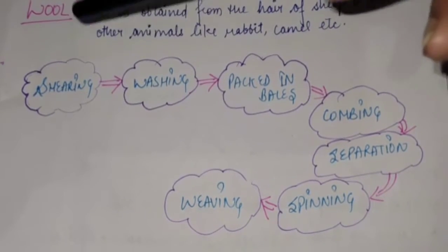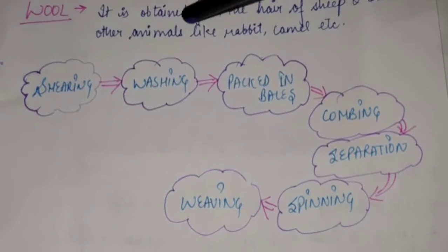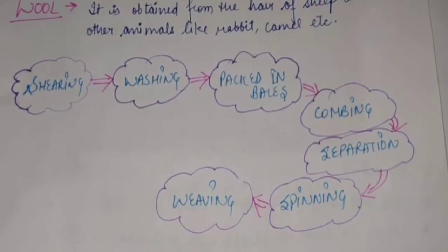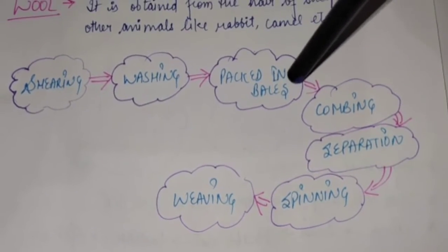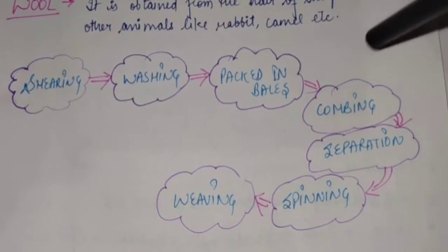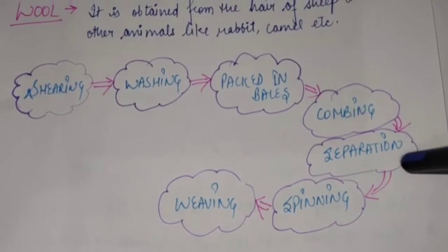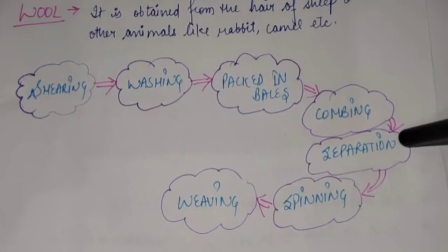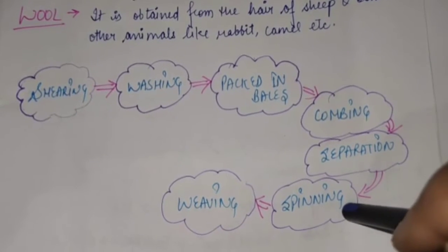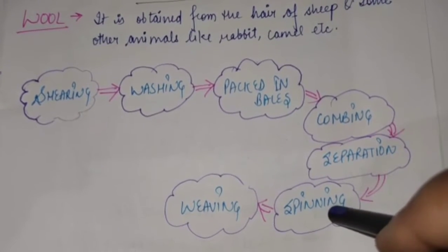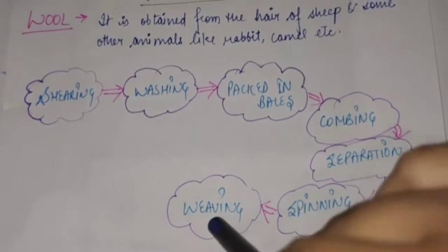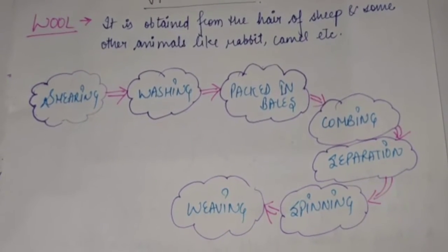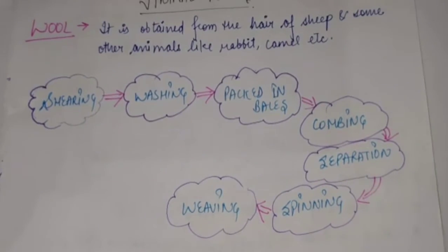After shearing, the fleece is washed to remove dust and dirt particles. Then it is packed into bales, and these bales are combed and the fiber is separated on the basis of its strength or quality. After that, using a spindle, it is spun into yarn which is then used to weave a fabric. In this way the whole wool fiber is made.